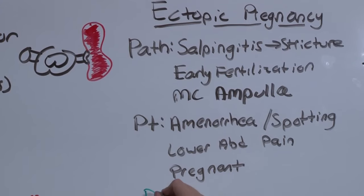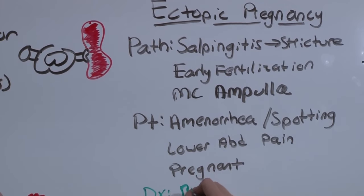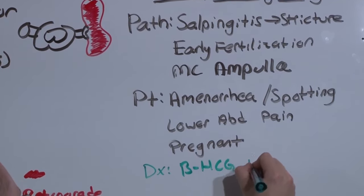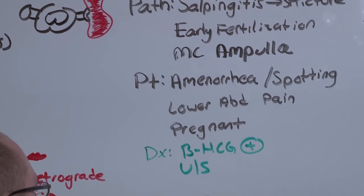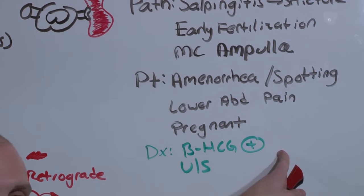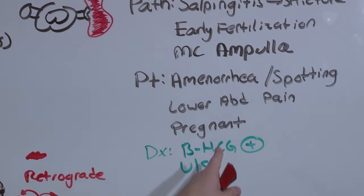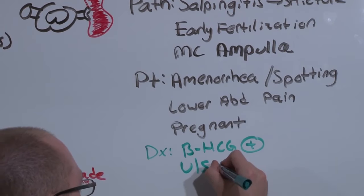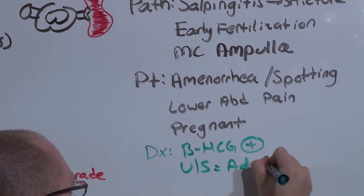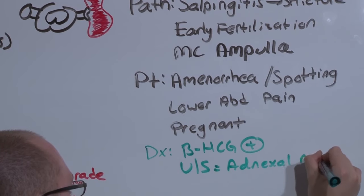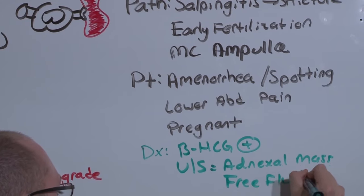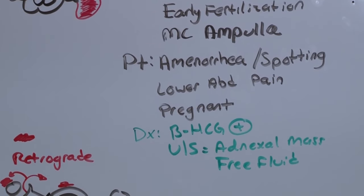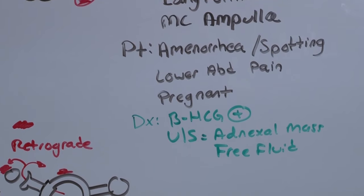The diagnosis begins with the beta-HCG, which will be positive, and then an ultrasound. What you're doing with the ultrasound is attempting to confirm intrauterine pregnancy. But there's not. What you'll see instead is an adnexal mass and probably some free fluid. This is your time to intervene. You have to treat.